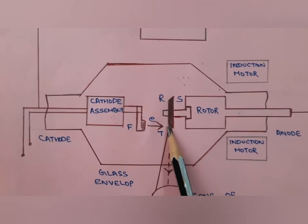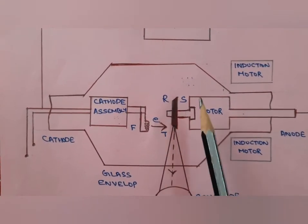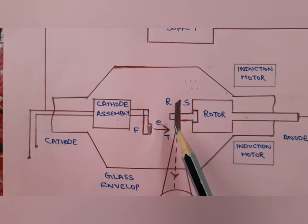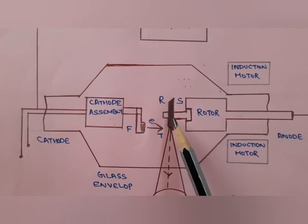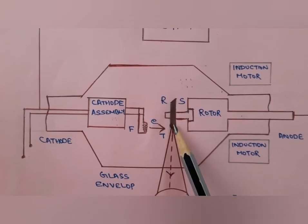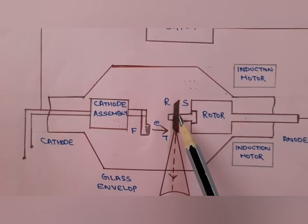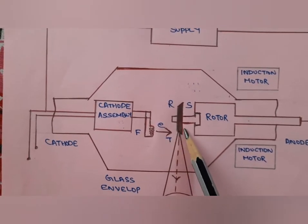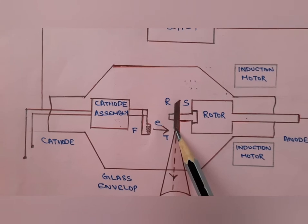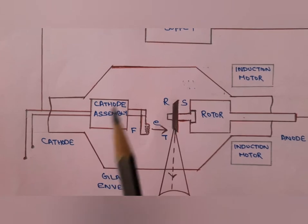We use a rotating anode X-ray tube because it provides a larger surface area for electron bombardment. In a stationary anode X-ray tube the target area was small, so the surface area for electron bombardment was comparatively less. In a rotating anode X-ray tube, the anode disc is shaped like a saucer and electrons bombard on the peripheral surface of the disc, increasing the surface area for electron bombardment.